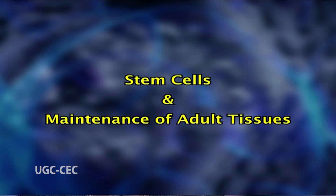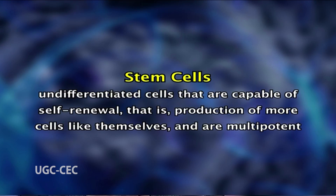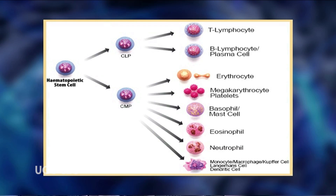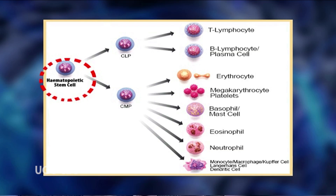Moving on to stem cells and maintenance of adult tissues: stem cells are defined as undifferentiated cells capable of self-renewal — that is, production of more cells like themselves — and they are multipotent, capable of differentiating into two or more mature cell types. Hematopoietic stem cells (HSCs) of the bone marrow are only one type of stem cell.